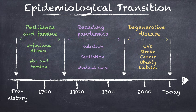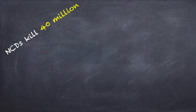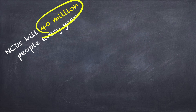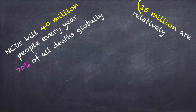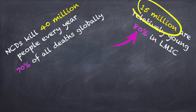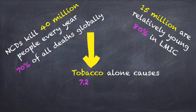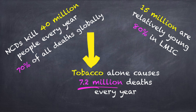To give a sense of the scale of the problem: non-communicable disease today kills 40 million people every year — about 70% of all deaths globally. 15 million of these are relatively young, between ages 30 and 69, and 80% of these premature deaths, many of which are preventable, occur in low and middle-income countries. Tobacco alone accounts for 7.2 million deaths every year, and this is projected to increase.